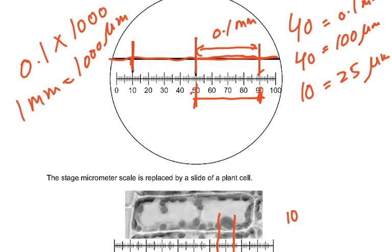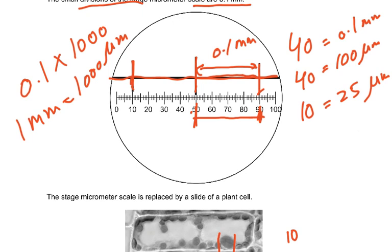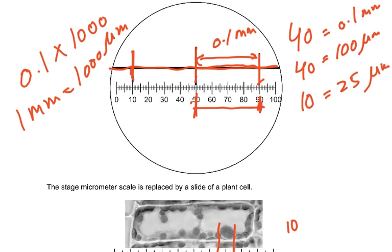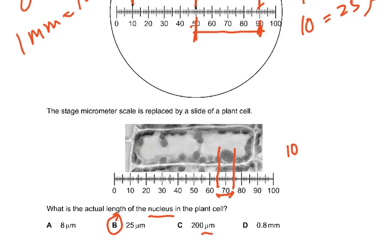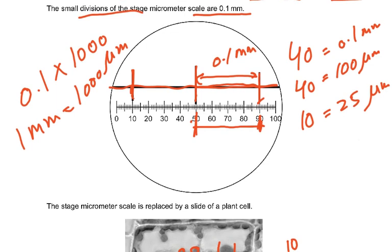To recap: the stage micrometer spans from 50 to 90, so 40 units equal 0.1 mm. Convert to micrometers because all the answer choices are in micrometers. The slide is then replaced by a plant cell; you identify the nucleus — or sometimes a chloroplast — measure its graticule units and calculate the actual size. Please go over this once or twice until you are clear.